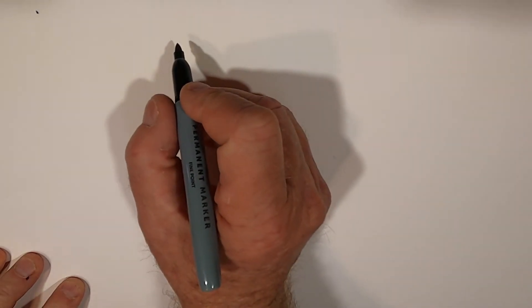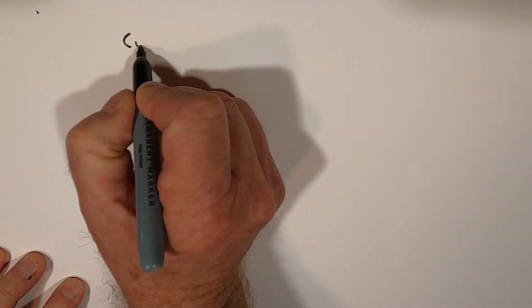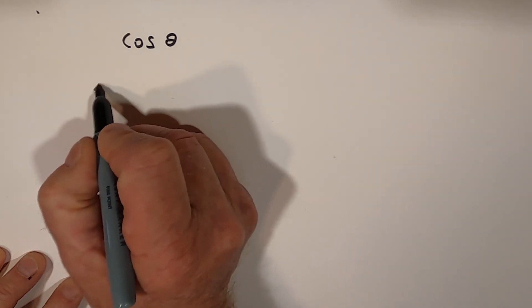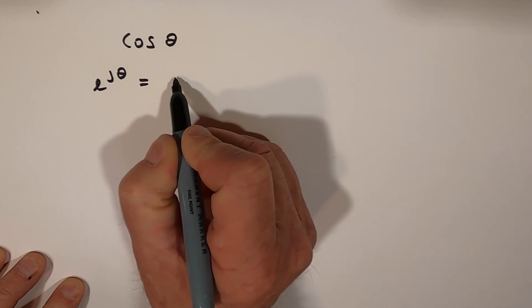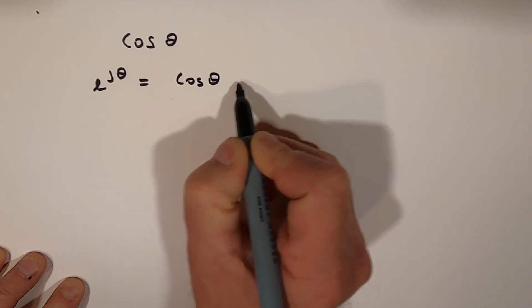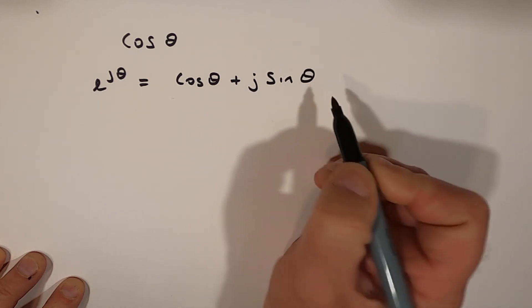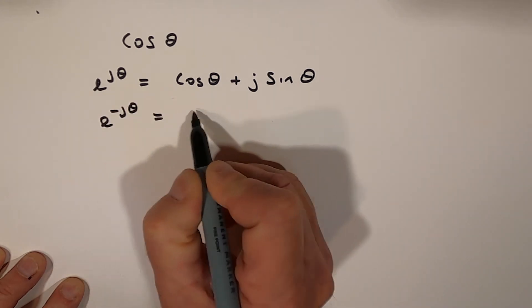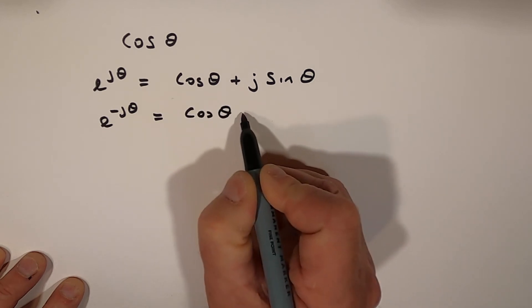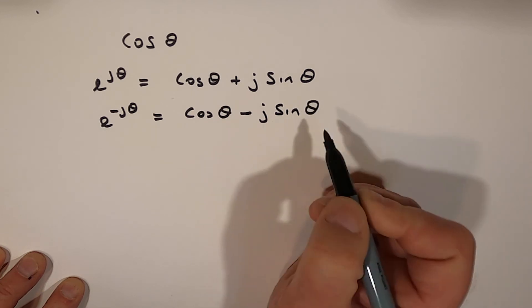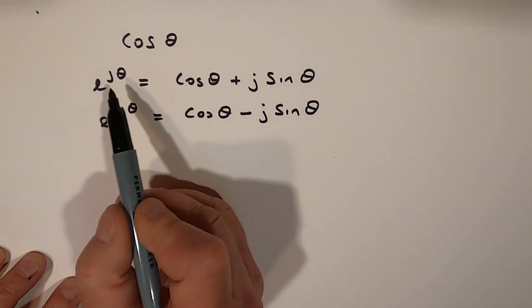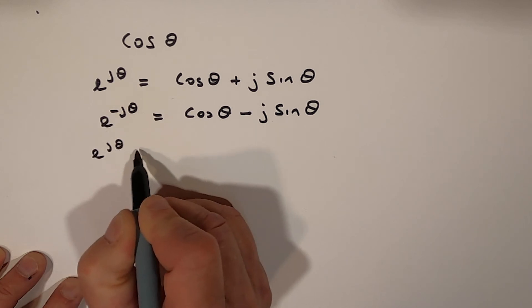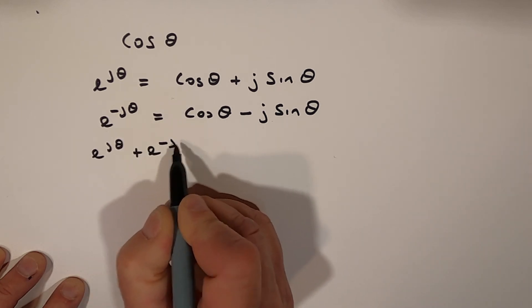Now let's derive a formula for cosine θ. We know from Euler's rule that e^(jθ) = cosθ + j·sinθ. And e^(-jθ) = cosθ - j·sinθ.